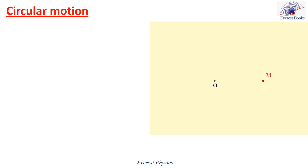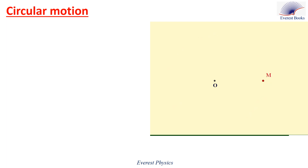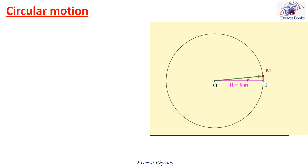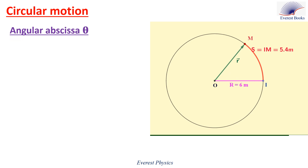Consider a particle moving on a circular path. In previous episodes, we determined the position of the particle using the position vector, which starts at the origin O of coordinates. Also, we use the arc length s to determine the position of the particle. Now, we want to determine the position of the particle using the angular abscissa.